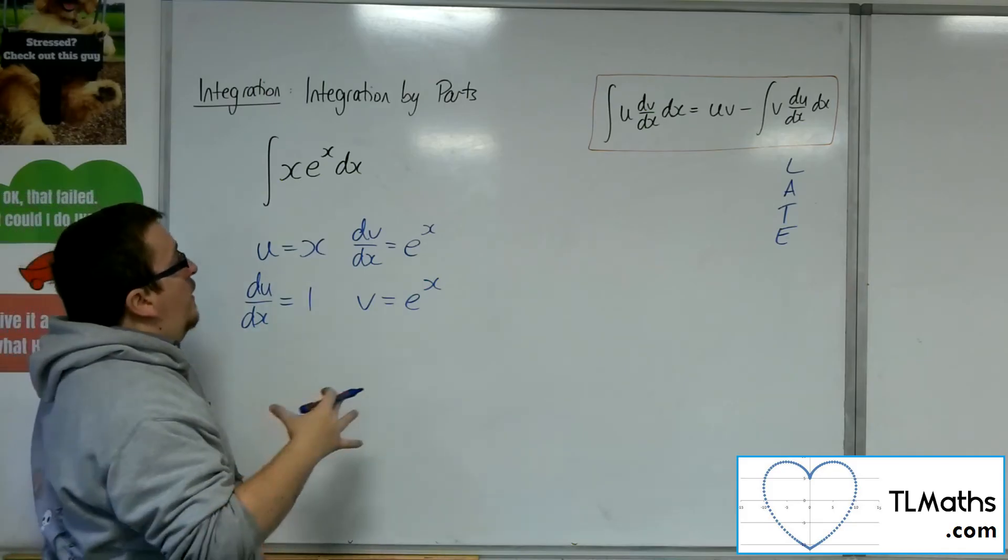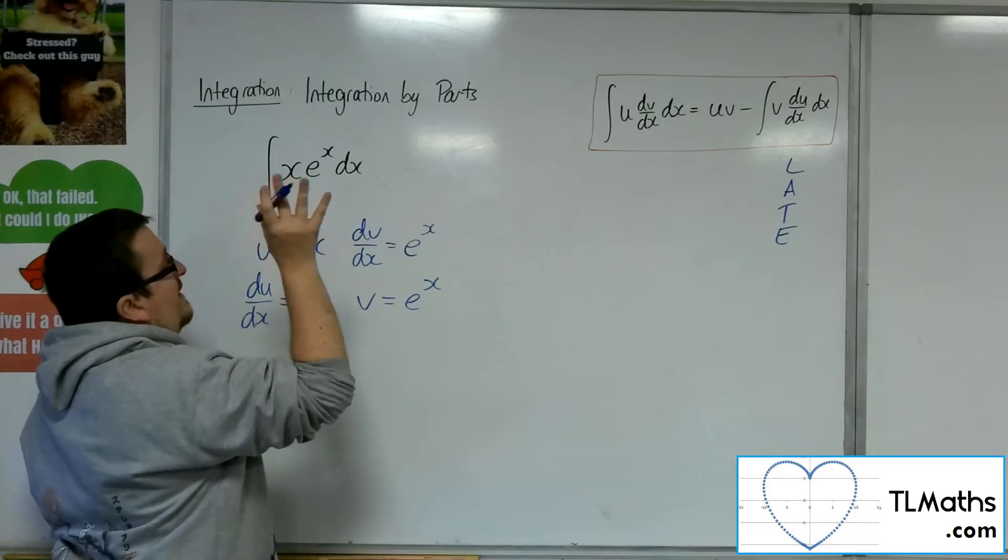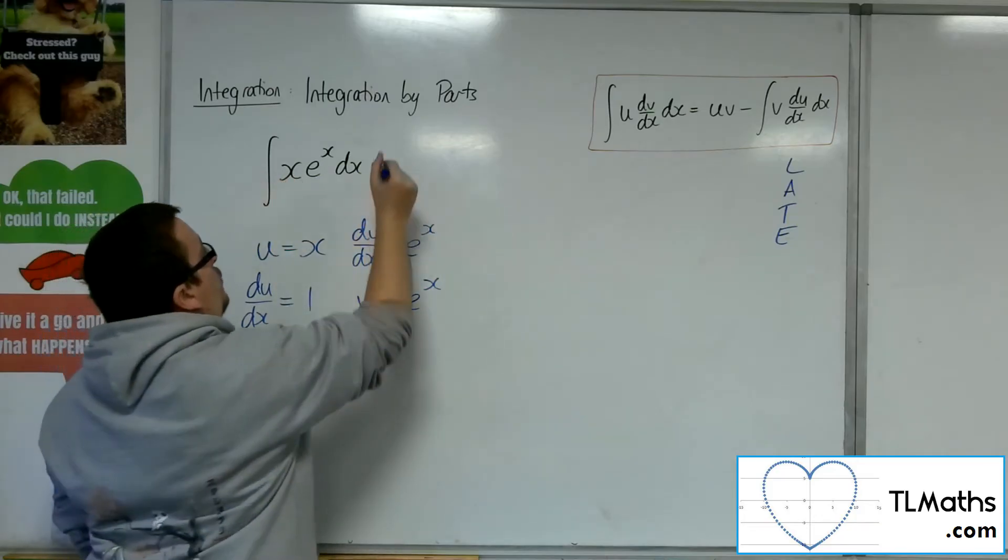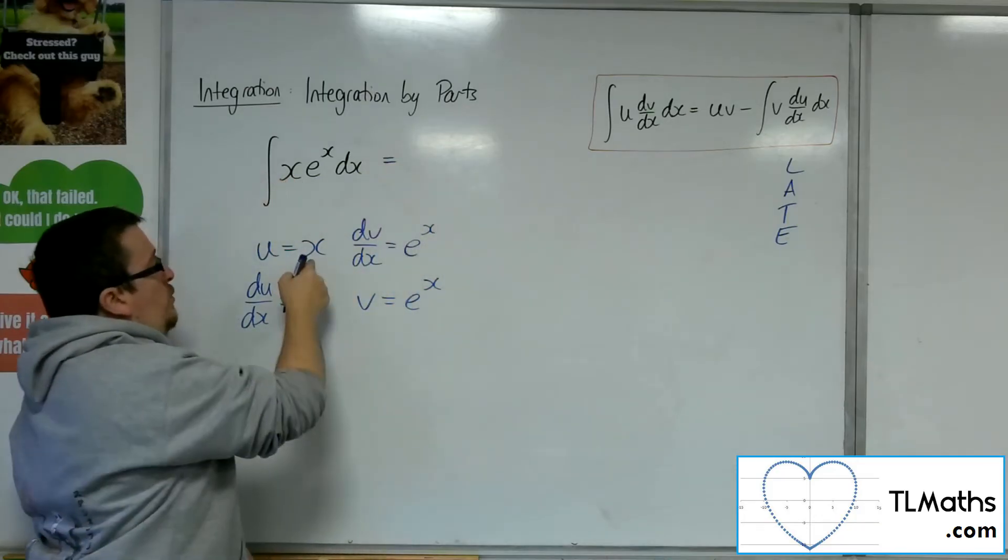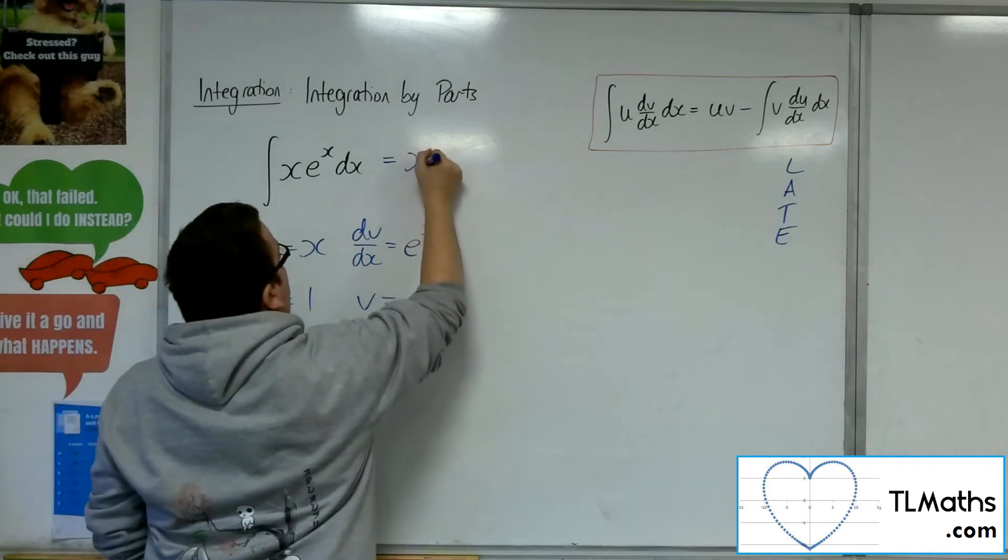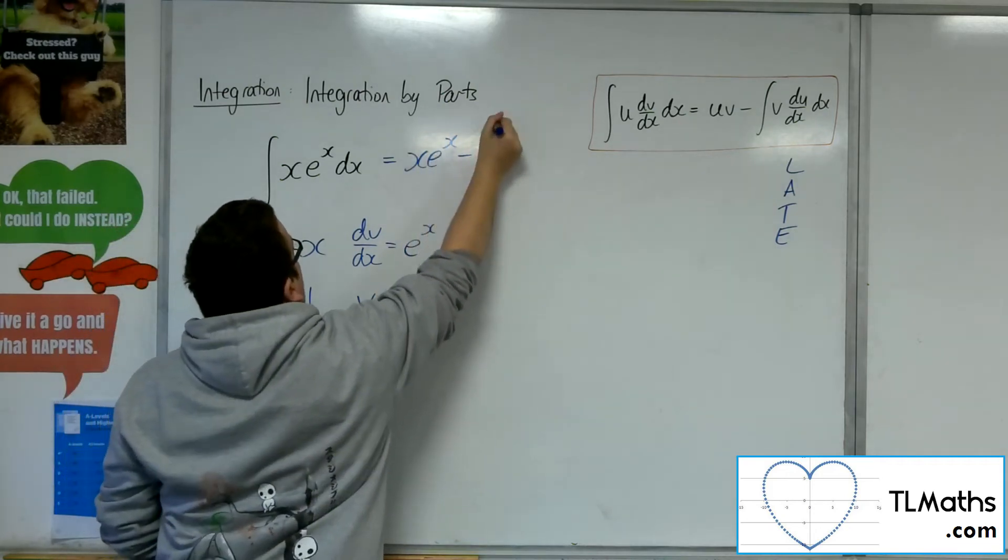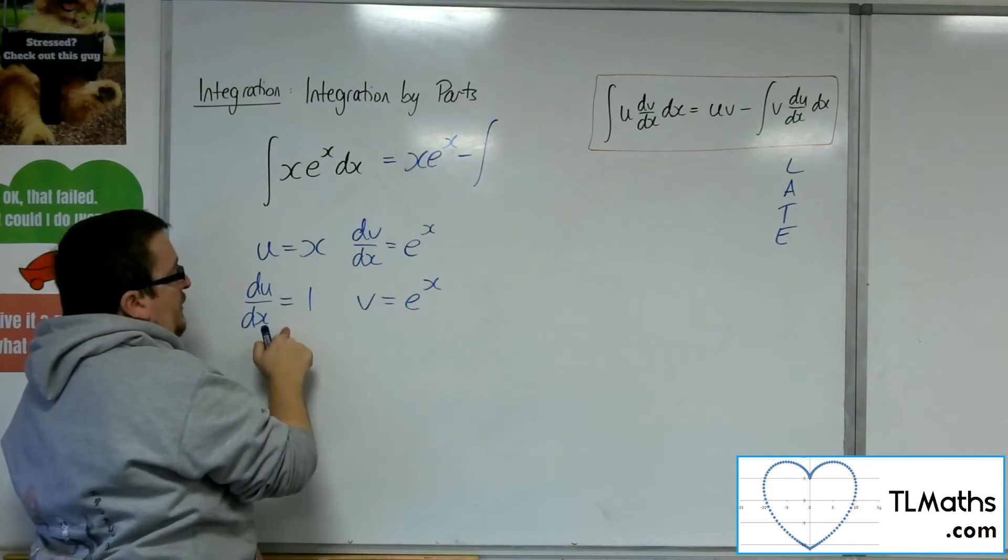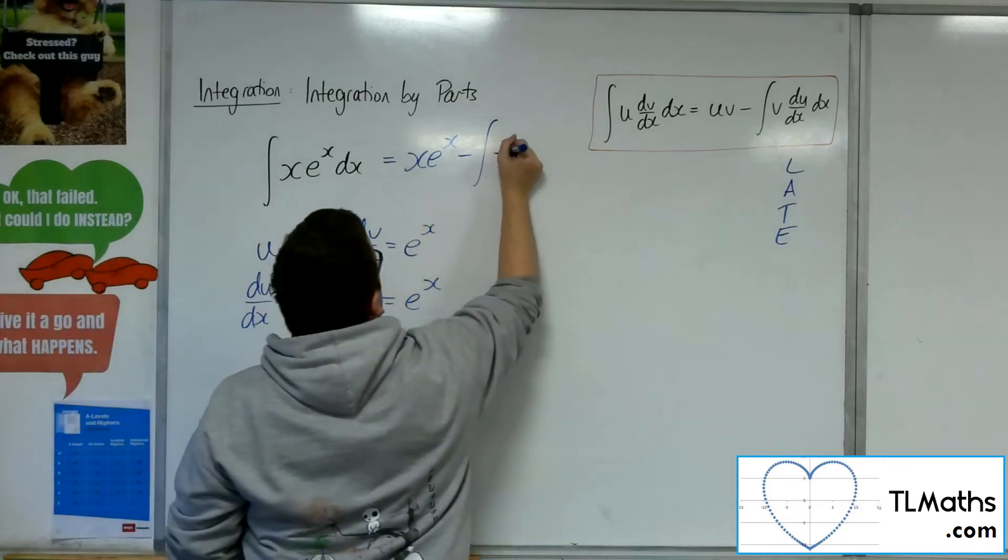So now I've got all the information I need to substitute it into that integration by parts formula. So I've got u times v, so x e to the x, take away the integral of v times du by dx. So just the integral of e to the x dx.